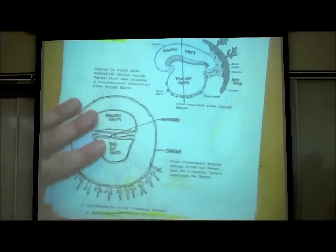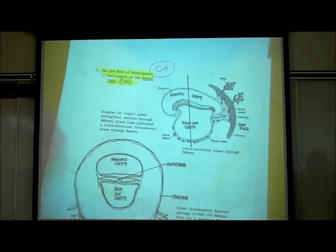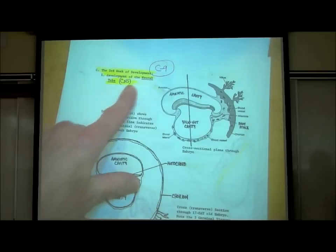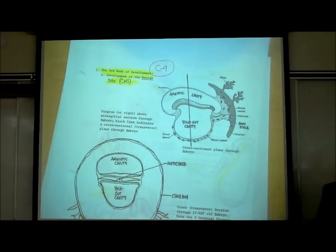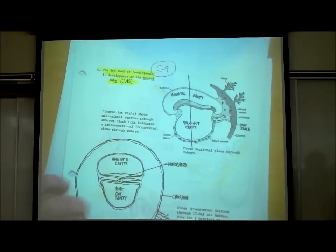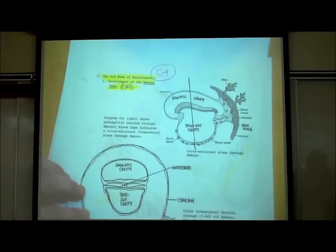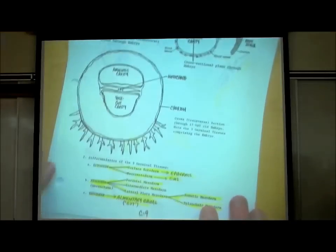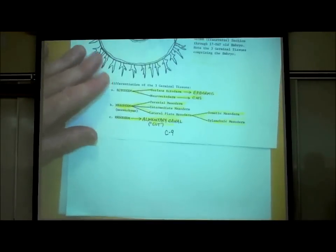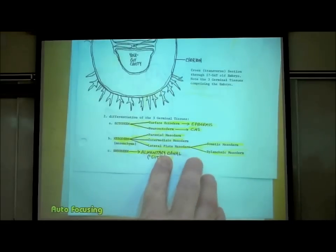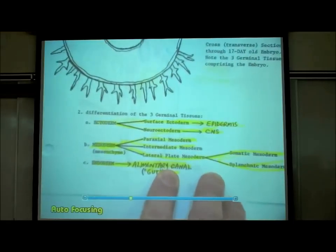That takes us to page C9. What happens during the third week of development? One of the most important things is the formation of the neural tube from ectoderm. That neural tube will become the central nervous system — the brain and spinal cord. At the bottom of the page, those three germinal layers — ectoderm, mesoderm, and endoderm — start to develop into various things.